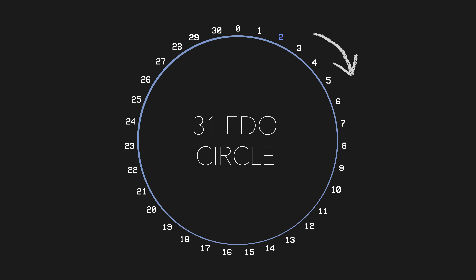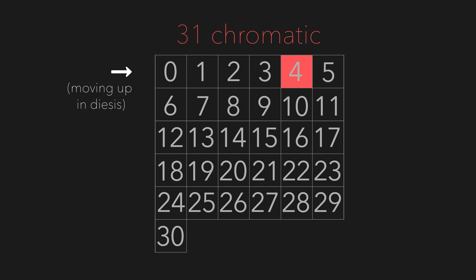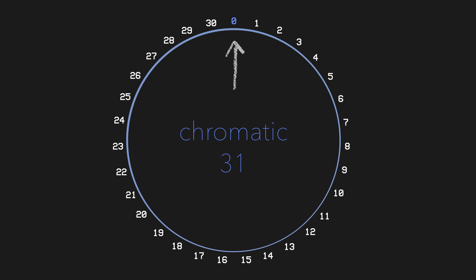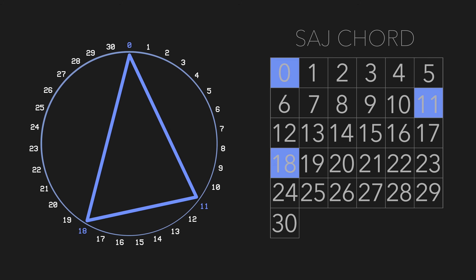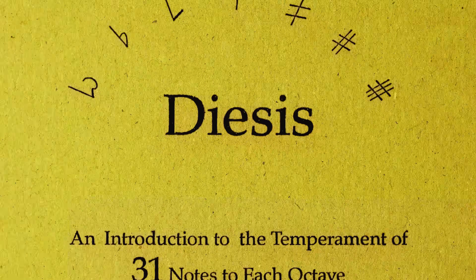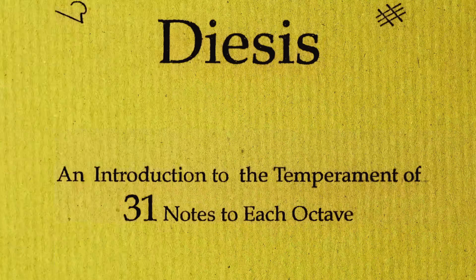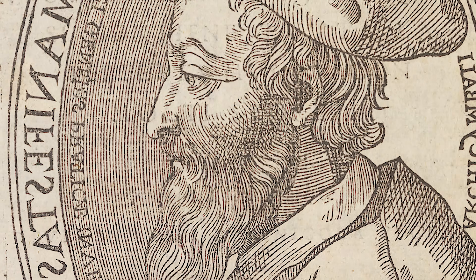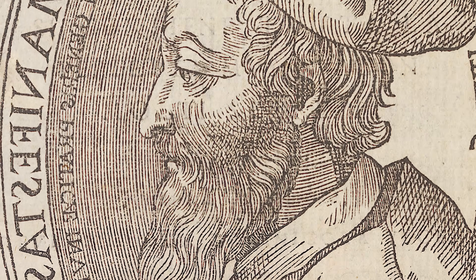This tiny little interval is the fundamental unit of 31. Chain enough of them together and you'll eventually arrive at the chromatic 31 scale. There are a multitude of ways of conceptualizing, building, and understanding 31. Personally, I like the approach that Bill Coates took in his 1992 book 'Diesis: An Introduction to the Temperament of 31 Notes to Each Octave.' He takes a more historical approach, leaning on the works of Vincentino, all the way back to Greek theorists like Ptolemy.